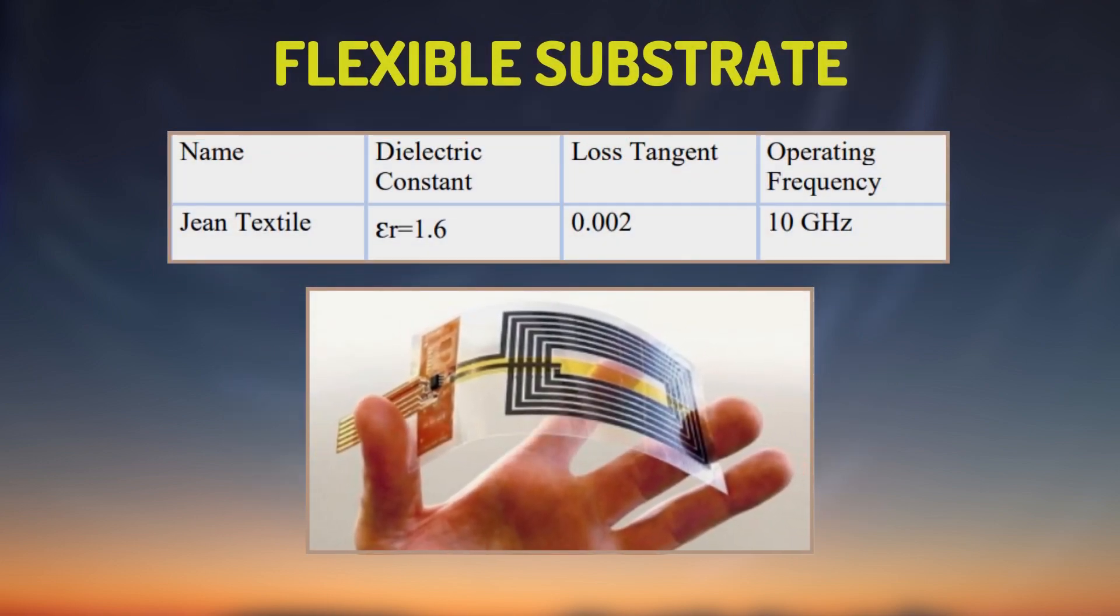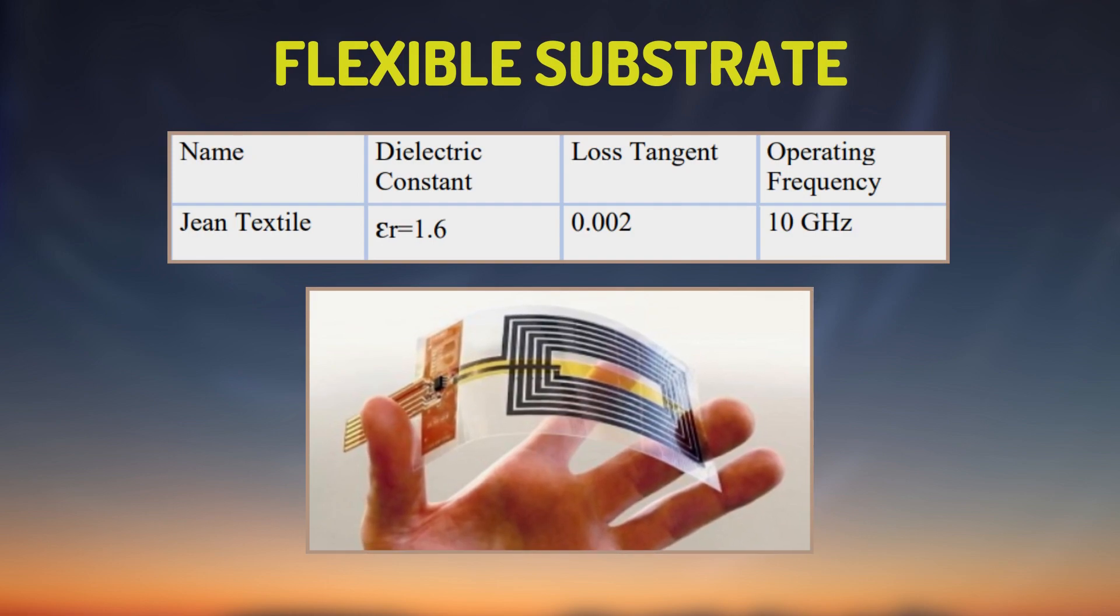Flexible substrate antennas play a key role in the integration and packaging of wireless communication devices and sensor networks. For this design, jean textile will be used as a substrate and its parameters are shown in the table.